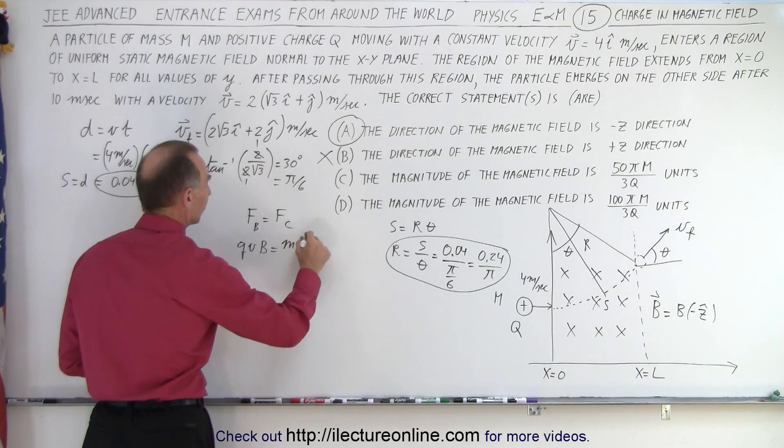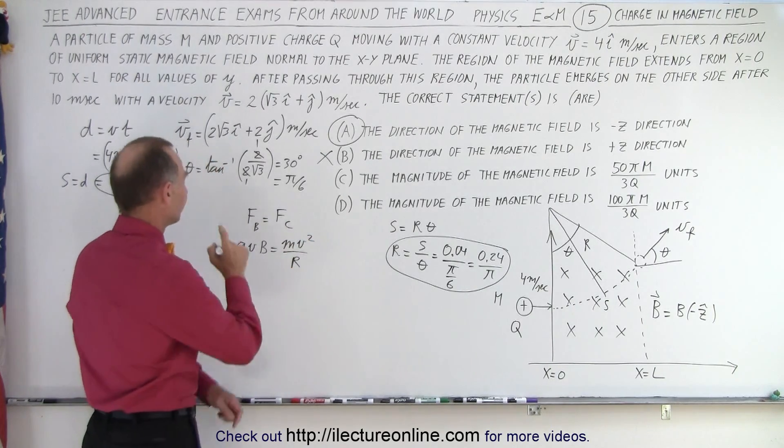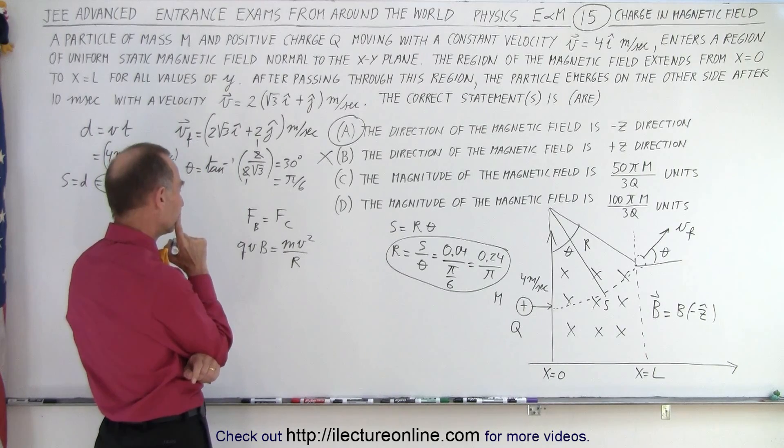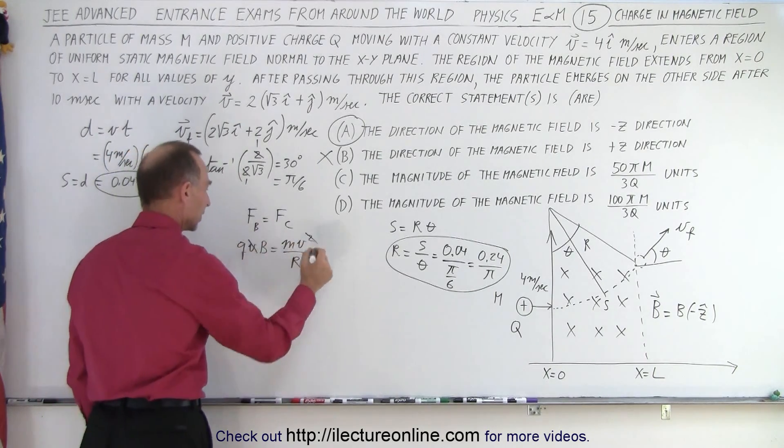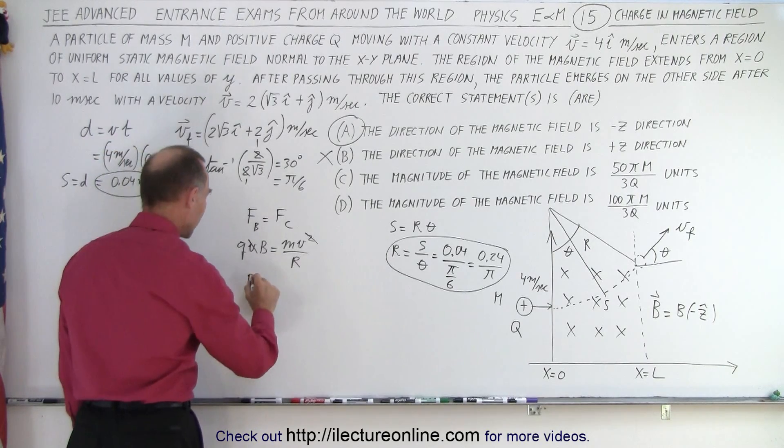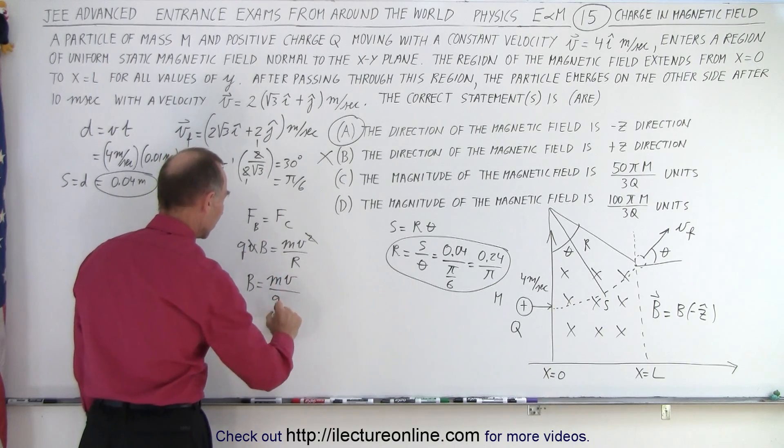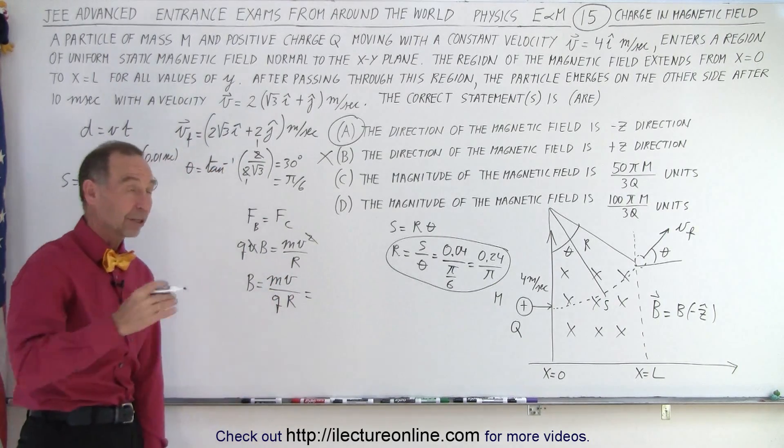The force due to the magnetic field is equal to q v B, and the force due to the centripetal force is equal to m v squared over r. So we have a v here and a v here that cancels, and we want the magnitude of the magnetic field. So B is equal to the mass times velocity divided by q divided by r. All we have to do now is plug in the numbers and hopefully we'll get one of those two answers.